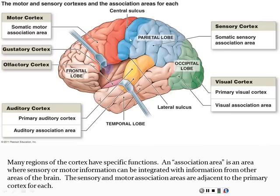The sensory cortex in the post-central gyrus also has an association area next to it. It's fine to sense things, but ideally you want to make sense of the sensation — like when you feel something on your skin and want to figure out what it is. The somatic sensory association area creates understanding out of sensation.